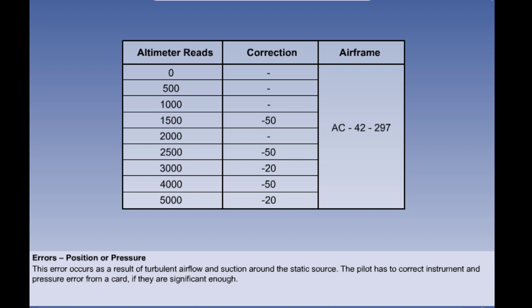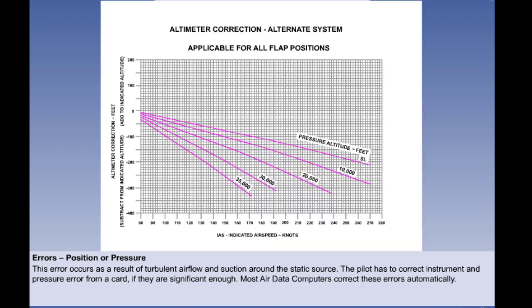This is an example for a relatively simple aircraft. For instance, on this card if you need to be at 4,000 feet and the correction is minus 50, you fly at an indicated altitude of 4,050 feet. This is an example from an aircraft with a wider operational envelope. These days the correction would almost certainly be incorporated into a device known as an air data computer which we will study later.